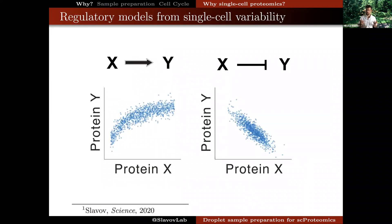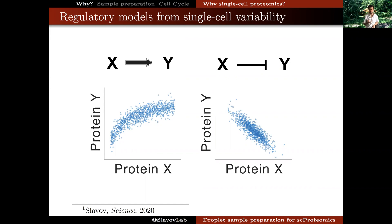Another exciting reason to measure protein abundances in single cells is the possibility to use protein co-variation to infer regulatory interactions between proteins, and particularly the exciting possibility of being able to condition the co-variation on various confounding factors and distinguish between direct and indirect regulatory interactions.